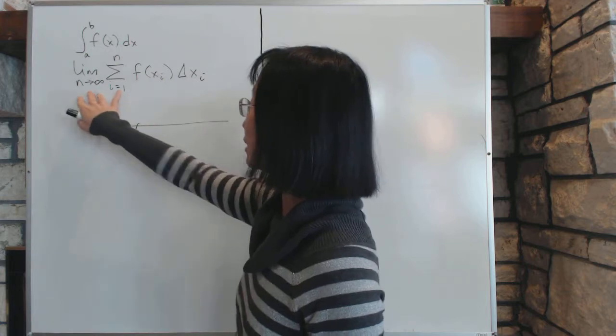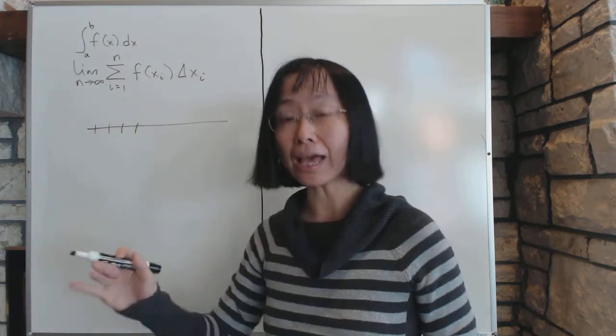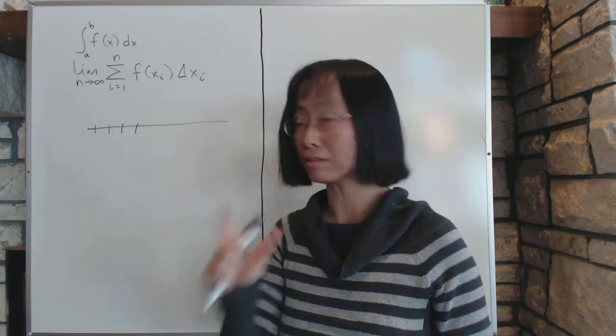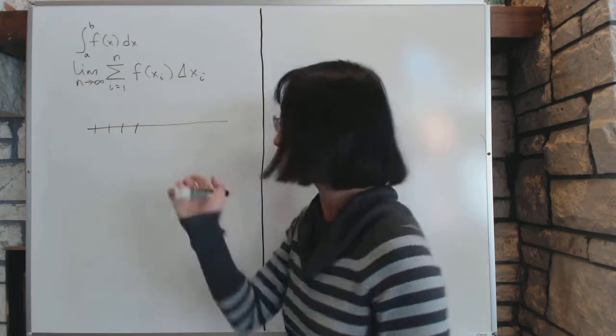And we take a limit as the number of chunks increase and the biggest chunk has to go to zero. So it can't just stay big. Everything has to get smaller and smaller.